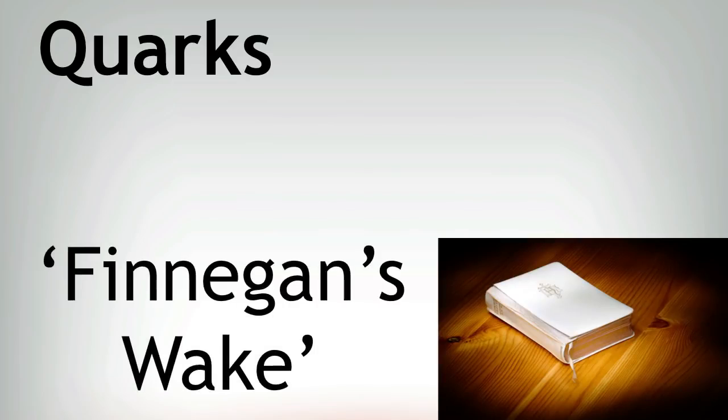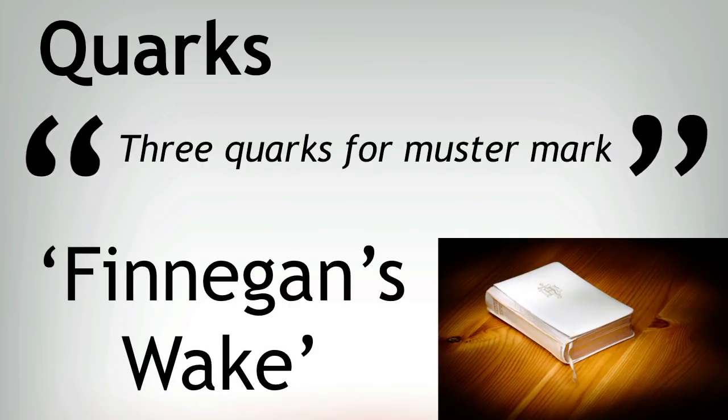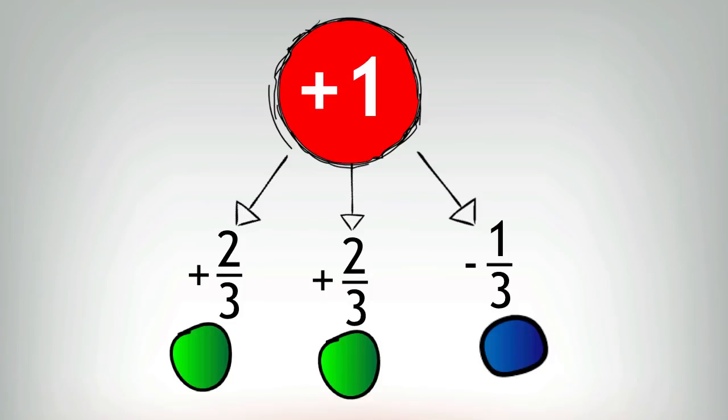The name quarks was chosen from the James Joyce novel Finnegan's Wake, three quarks for Muster Mark. In order for their calculations to work however, these quarks needed to have a fractional charge. This was a new concept as fractional charges had never been seen before.